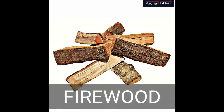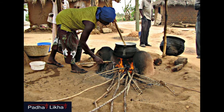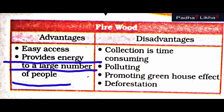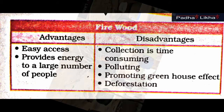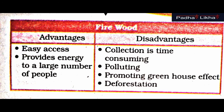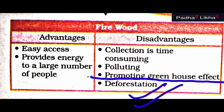Conventional sources can be studied in detail. First, firewood. Firewood is widely used for cooking and heating. More than 50% of energy used by villagers comes from firewood. It is easily accessible and provides energy to a large number of people. However, it promotes the greenhouse effect and causes deforestation.